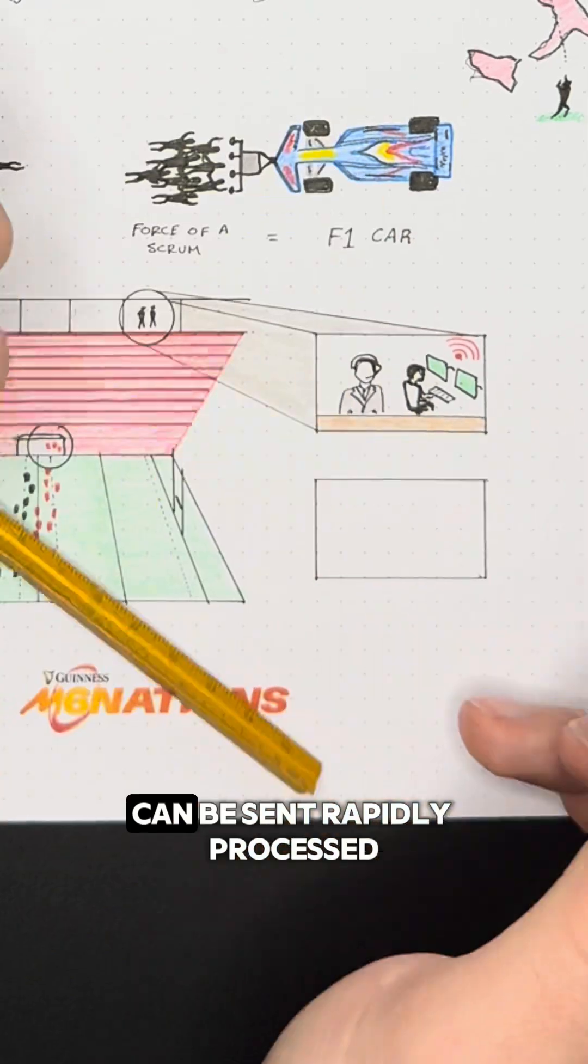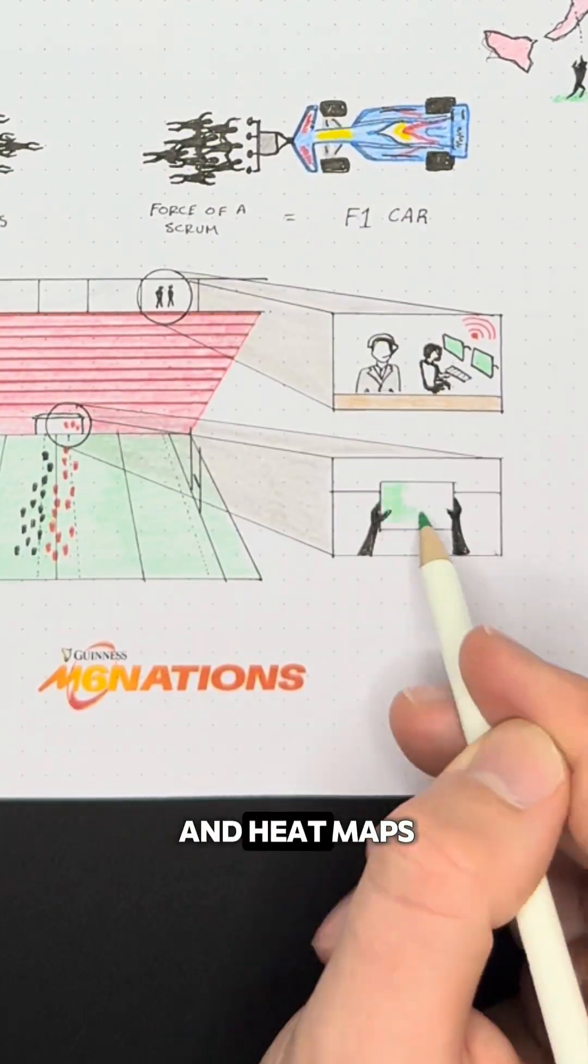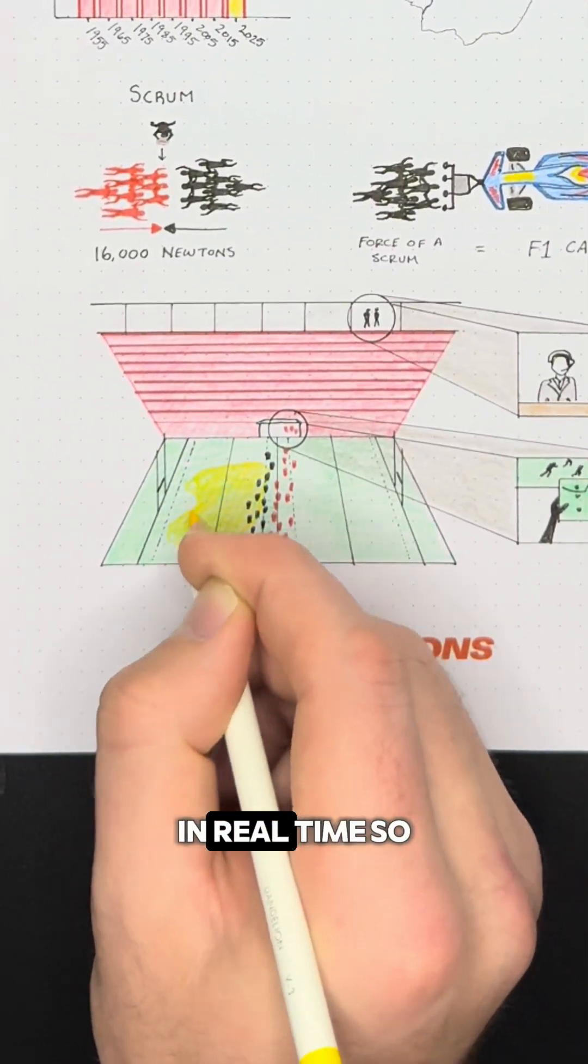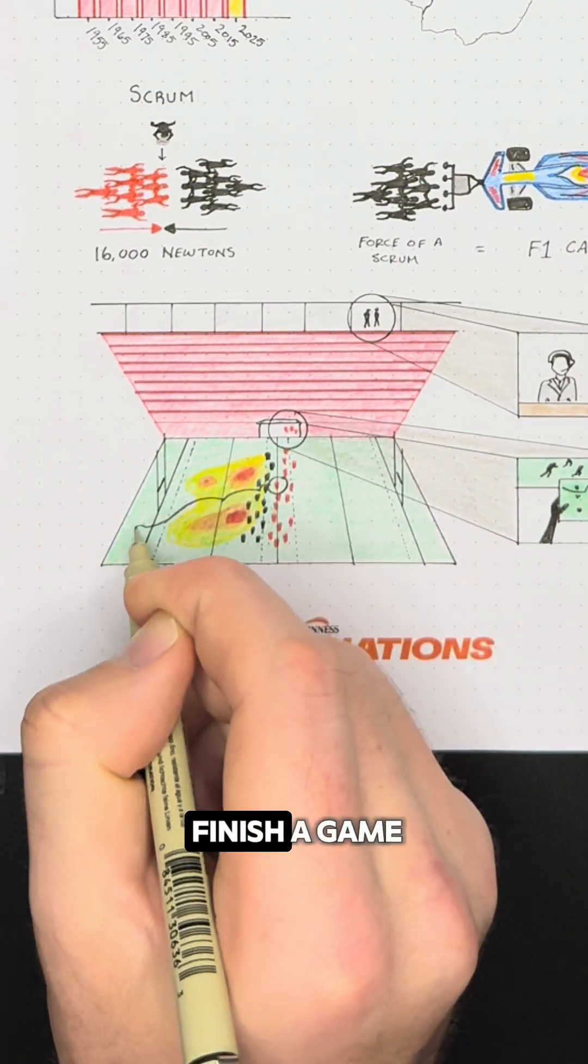Throughout the game, reserved players on the bench can be sent rapidly processed catapult clips coupled with directional overlays and heat maps directly to their tablets. These highlight gaps in the opposing team's strategy in real time, so they can target weaknesses and make an immediate impact when subbed in to finish a game.